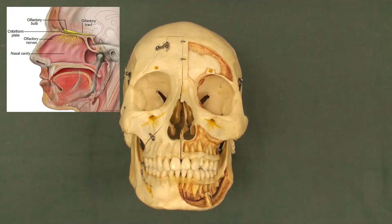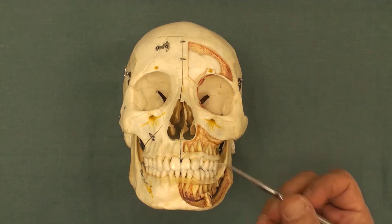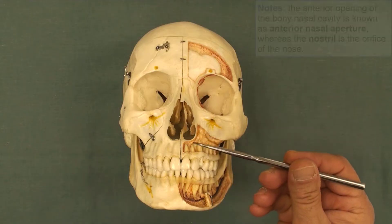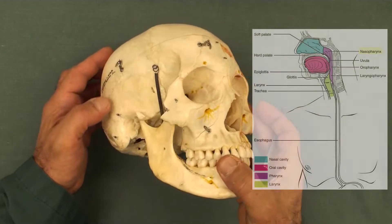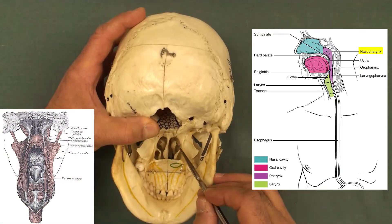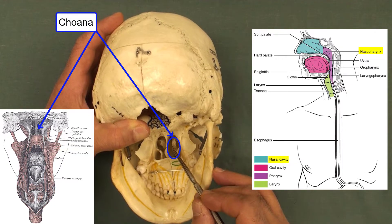The two nasal cavities are the uppermost parts of the respiratory tract, which contains the olfactory receptors. Each nasal cavity is an elongated wedge-shaped space, open to the anterior side of the face by the nostril or naris, and it opens on the posterior side to the nasopharynx. I'm going to turn the skull so you can see this posterior opening, known as the choana, which connects the nasal cavity to the nasopharynx.